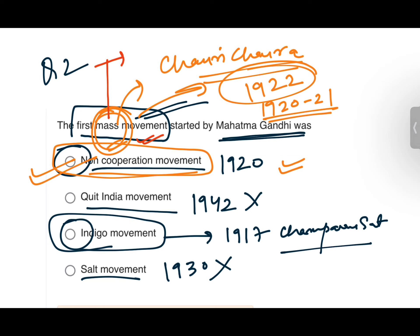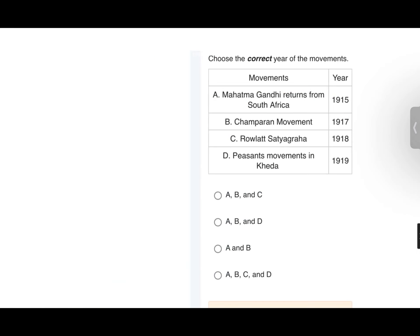The main reason for starting the Non-Cooperation Movement was the Jallianwala Bagh massacre in Amritsar in 1919. Because of that massacre, Gandhi Ji started the Non-Cooperation Movement, saying that now we cannot cooperate with the British — that is why the Non-Cooperation Movement was started.